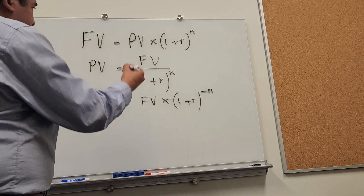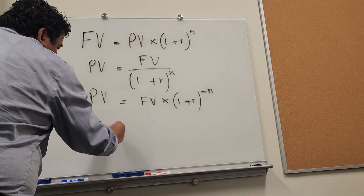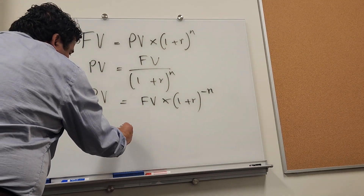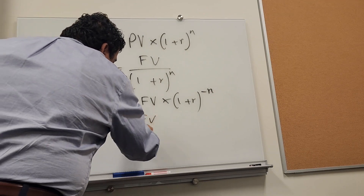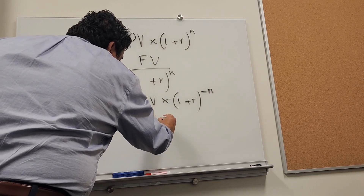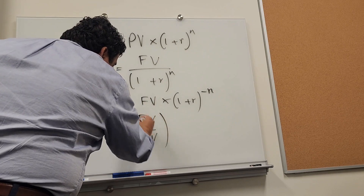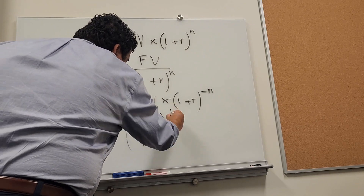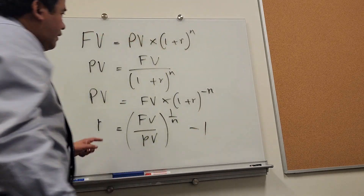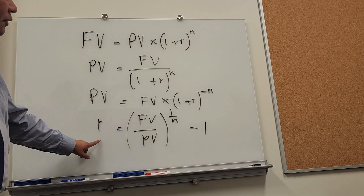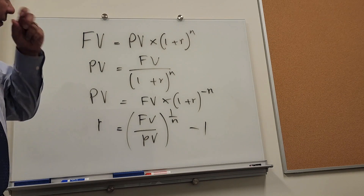If you want to calculate r, you can rearrange this equation to find r. So r equals future value over present value, raised to the 1 over n power, minus 1. That's the equation to find r.